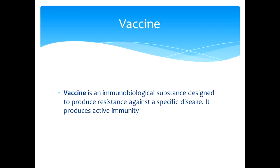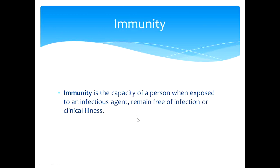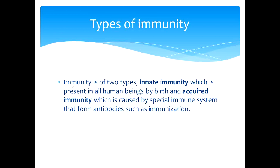What is a vaccine? It is an immunobiological substance designed to produce resistance against a specific disease. It produces active immunity. Immunity is the capacity of a person, when exposed to an infectious agent, to remain free of an infection or clinical illness.